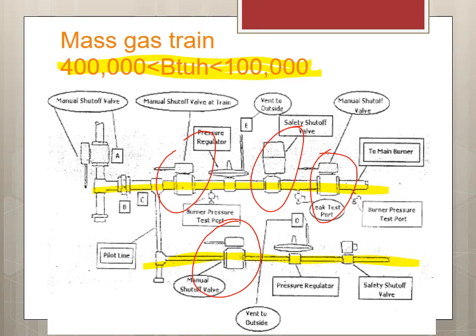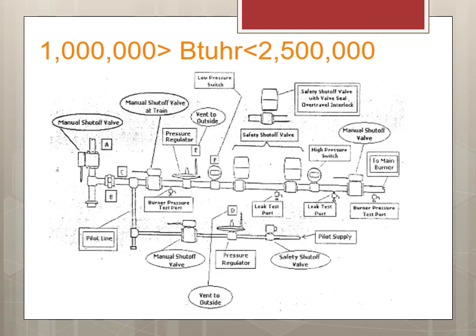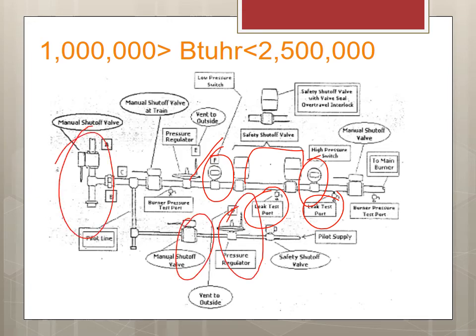We have two Safety Shutoff Valves in series — doubles in case one fails — and they're also useful for replacement and gauging pressure. You can isolate and take out a valve by shutting them off. This is the main fuel line with another manual shutoff valve for the incoming gas before it reaches the pilot and main fuel. From 1 million to 2.5 million BTUs we see more configuration with additional pressure controls — gauges after the regulating valve, two shutoff valves, leak test ports, a diaphragm valve, and manual valves on the main line.